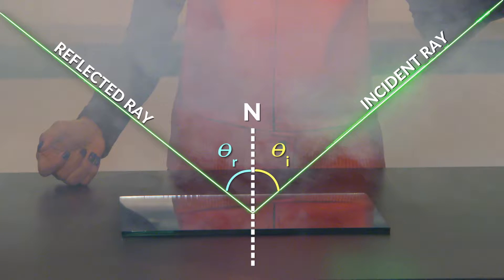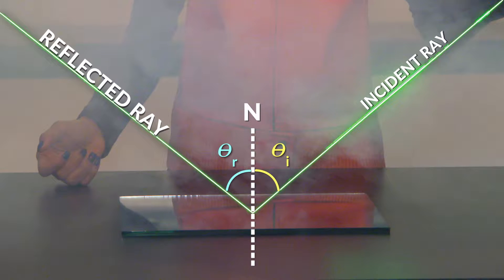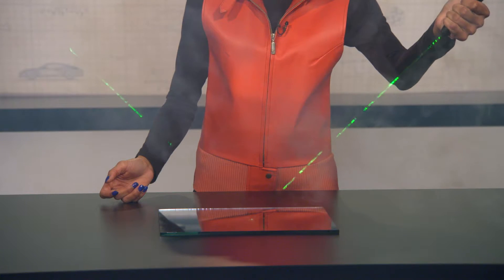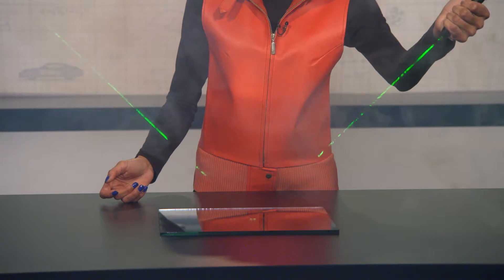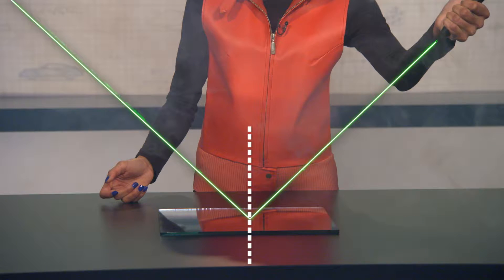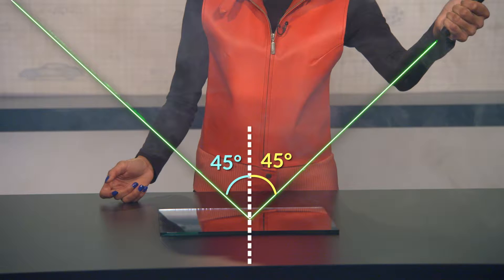Because of this, the normal line divides the angle between the incident ray and the reflected ray into two equal angles. If I shine this laser pointer at an angle of 45 degrees from the normal line, the reflected ray will also be 45 degrees from the normal line.